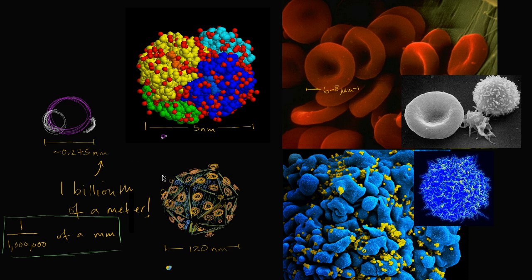Now let's go to the next scale up. We've talked a lot about proteins, and this right over here is our friend hemoglobin. Just to get a sense of scale, the width of hemoglobin is going to be about five nanometers, or five billionths of a meter. It's okay to categorize that as super small, but it's good to appreciate this is much larger than a water molecule. If a water molecule were on this scale, that little thing over there is my attempt at drawing a water molecule at the same scale. So even going from a water molecule to a protein, you're already going dramatically up in size.